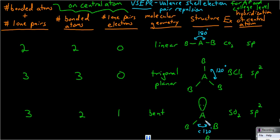Bonds and lone pairs of electrons will spread out as much as possible. This is the reason for the molecular geometries we'll see here. You should be able to be familiar with all of these geometries. In time, they should become intuitive, as you know that things will spread out as much as they can from each other.